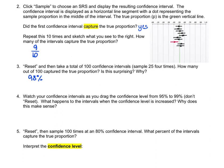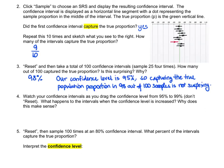Just like we have sampling variability, when we sample 100 we're still going to have some variability, so you may have higher or you may have lower — just write down what you got under number three. Is this surprising or is it not? With a confidence level of 95%, capturing the true population proportion 98 times out of 100 samples is not surprising.